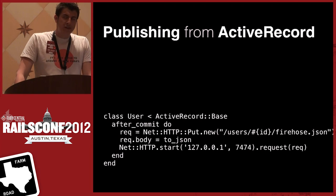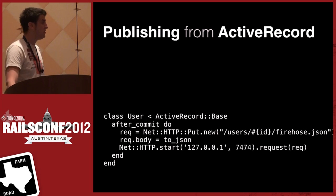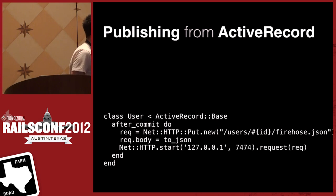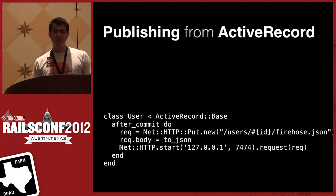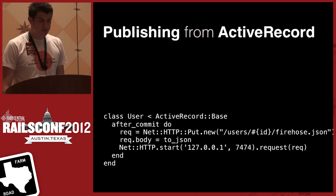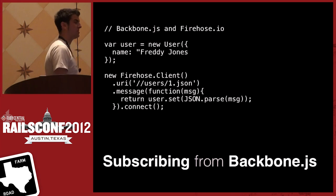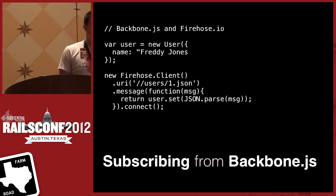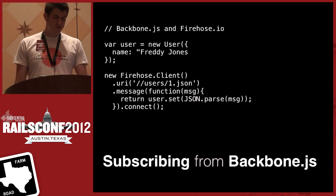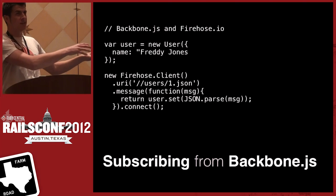To integrate this into Rails, you just put the JSON representation of a model onto the Firehose with the corresponding URL — request.body equals the JSON — and fire off the request. On the client side, you have a Backbone user model in the web browser listening on user slash one. When a message comes in, you parse the JSON and set the user, and however you have it configured on the client side, it will update everything.